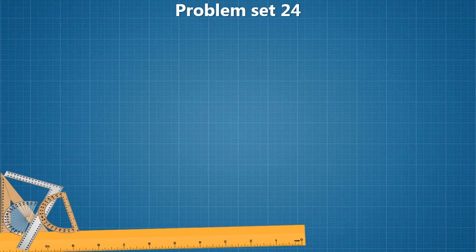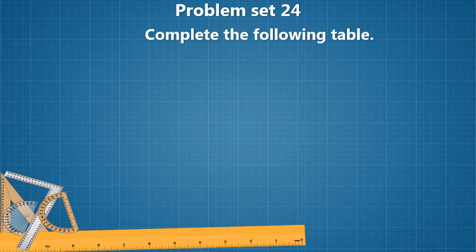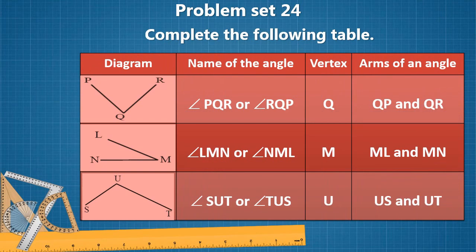Let us solve problem set 24 — complete the following table. Various angles are given and we have to write the name of the angle, the vertex, and the arms. The first angle is angle PQR, or it can also be written as angle RQP. Q is the common end point, so the vertex of this angle is Q, and QP and QR are the arms of this angle.